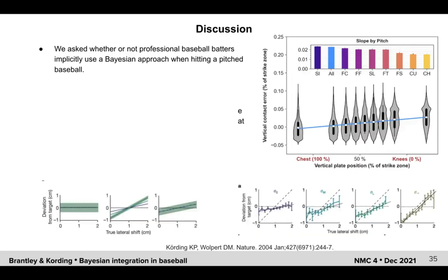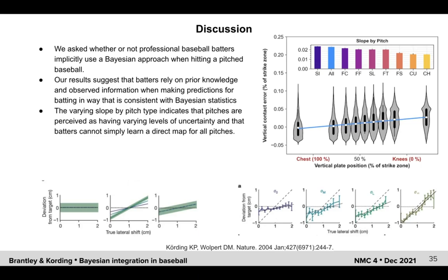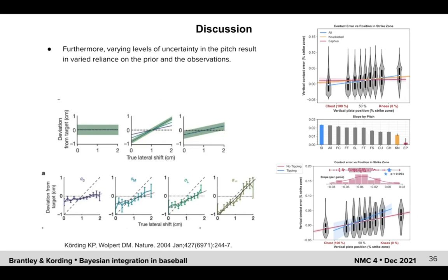So in summary, we asked whether professional baseball batters implicitly use a Bayesian approach when hitting a pitched baseball. Our results suggest that batters rely on prior knowledge and observed information when making predictions for batting in a way that is consistent with Bayesian statistics. The varying slope by pitch type indicates that pitches are perceived as having varying levels of uncertainty, and that batters cannot simply learn a direct map for all pitches. Furthermore, varying levels of uncertainty in the pitch result in varied reliance on the prior and the observations. We believe that this is exciting evidence of Bayesian behavior in a real-world movement task.